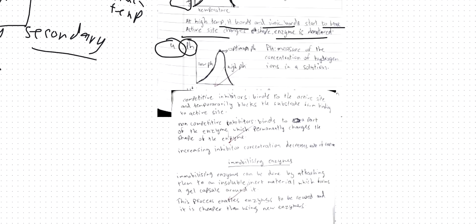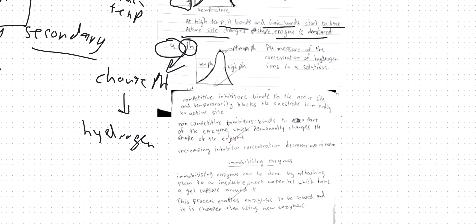pH is very similar to the temperature changing concept. When you have a change in pH, this will cause the tertiary and secondary structure to break because again they have hydrogen bonds. So at high pH, the hydrogen bonds break and the rate of reaction would decrease to zero. pH is a measure of concentration of hydrogen ions in a solution. If the pH is high, this would mean you have a low concentration of H+ ions, but at low pH you will have a high concentration of H+ ions.